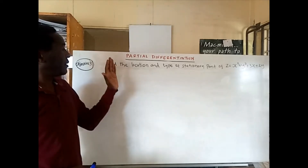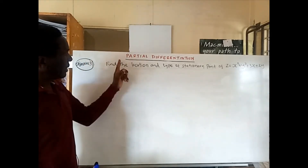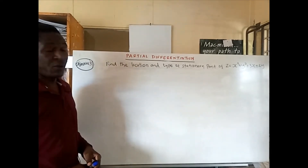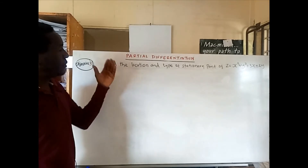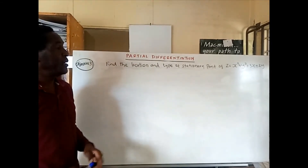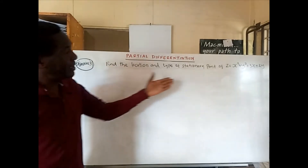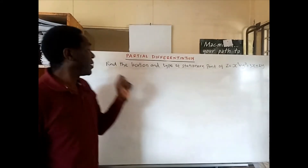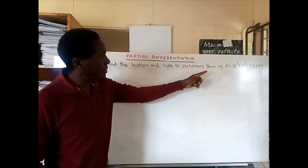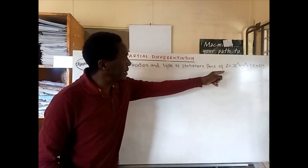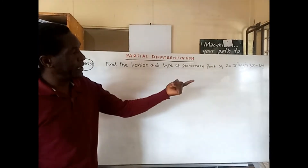We are doing the last bit of objective 3 as far as partial differentiation is concerned. The objective is to find the location and type of stationary point, and we're doing that with an example already written on the whiteboard. The function is Z equals x squared plus y squared plus 3x plus 2.